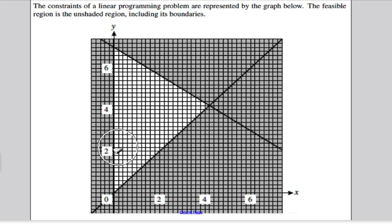It starts off by showing you the following diagram. It says the constraints of the linear programming problem are shown below, the feasible region is in the unshaded region, including the boundaries.